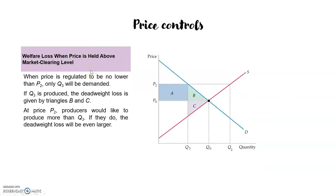What happens when there is a price floor — when the price is regulated to be no lower than p2? At p2, only q3 will be demanded, because that is the quantity where p2 crosses the demand curve. So if q3 is produced, there will be a deadweight loss given by triangles B and C again.